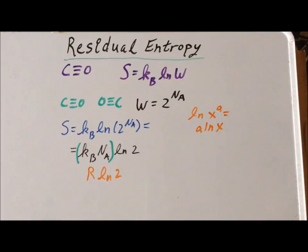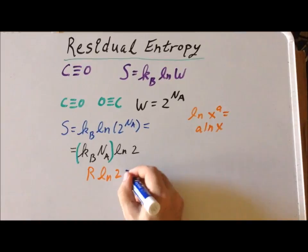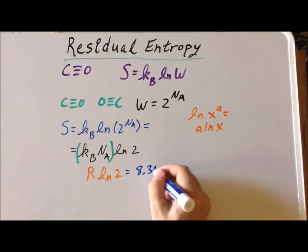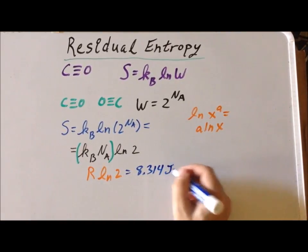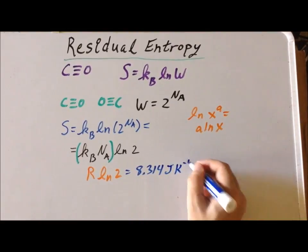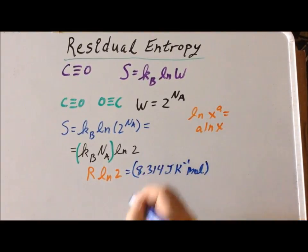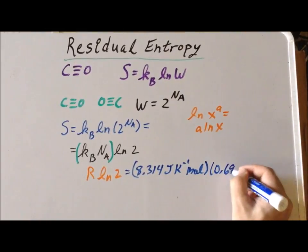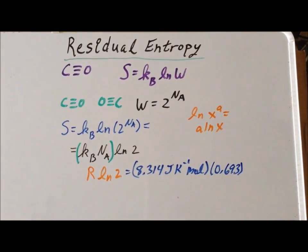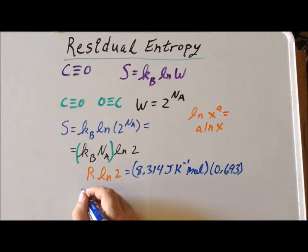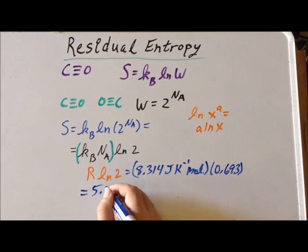We know that the gas constant has the value of 8.314 joules per Kelvin mole. And we also know that the natural log of two is 0.693. So if we multiply those out, we get that the expected theoretical residual entropy for carbon monoxide is going to be 5.76 joules per Kelvin mole.